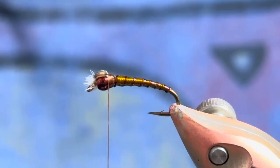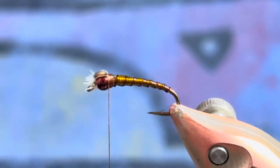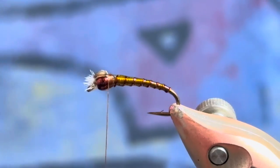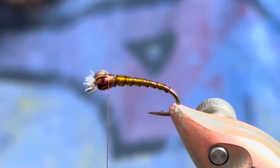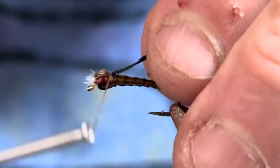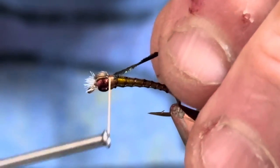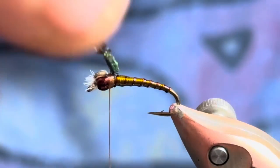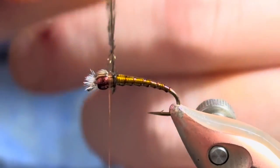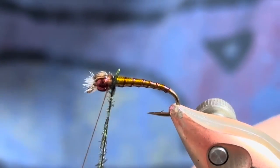So I'll call that good for video purposes. Now I'm going to grab a strand of peacock herl. You can use dyed orange, the dyed stuff doesn't seem to have the fibers that the natural undyed stuff does. I don't know if they shrink in the dying process or what the deal is there.